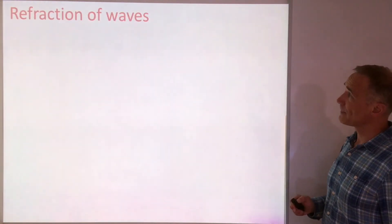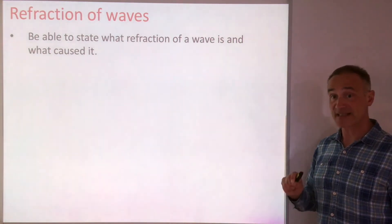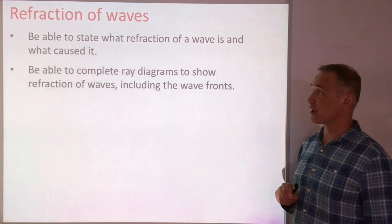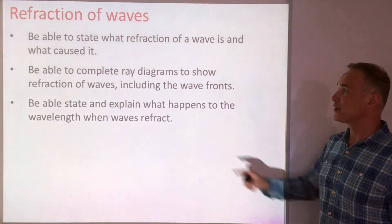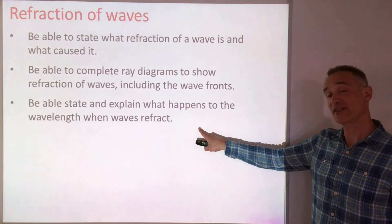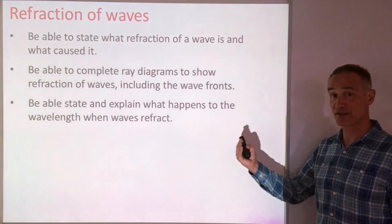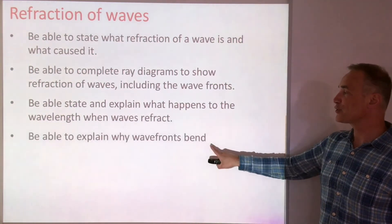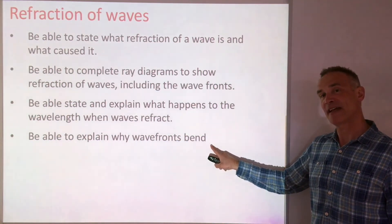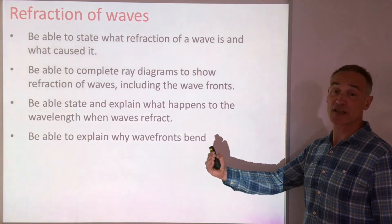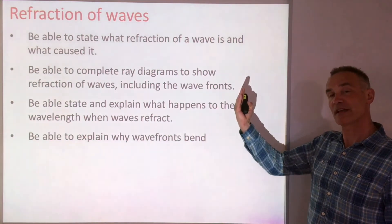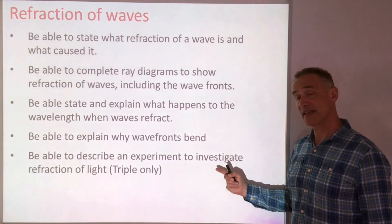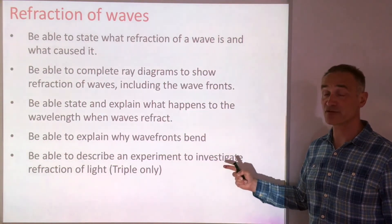Let's reflect on what we've done. You should be able to state what refraction is — the bending of light or a wave because it changes speed. You should be able to complete ray diagrams to show refracting waves including the wave fronts. You should be able to state and explain what happens to the wavelength when waves refract: if the speed increases so does the wavelength; if the speed decreases so does the wavelength, because frequency stays the same. You should be able to explain why wave fronts bend — using the lorry analogy: the wave front that slows down first doesn't travel as far compared with the wave front still in deep water, so it bends. Finally, for triple only, the last section covers an experiment to investigate refraction of light.